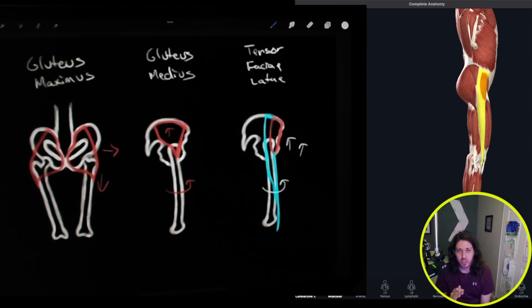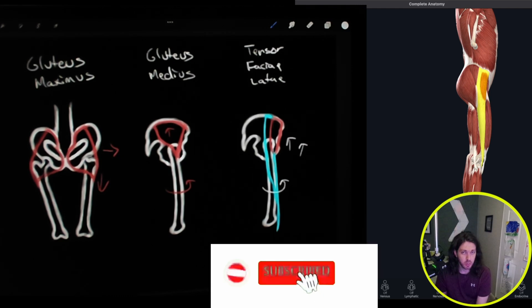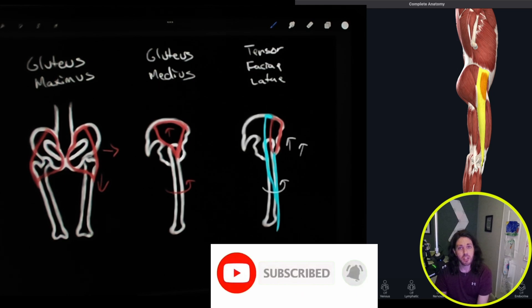Alright, so that covers the insertion and the origin and the movement of all the three major butt muscles. So I hope you found this helpful. If you have any questions or even suggestions on videos that you would like to see me share, I'm working on anatomy. I'll be continuing on the leg muscles. So make sure you subscribe so you don't miss out on those. And I can't wait to see you in the next video. See you next time.